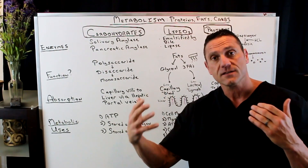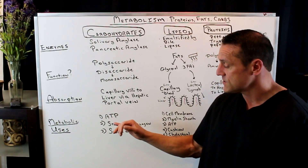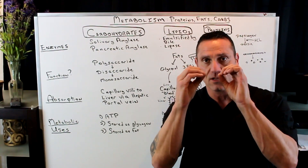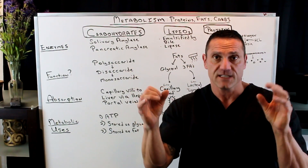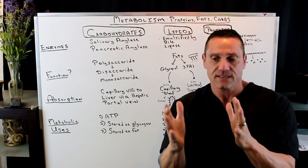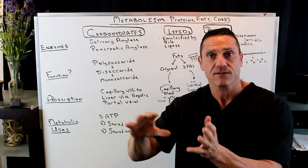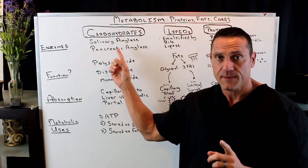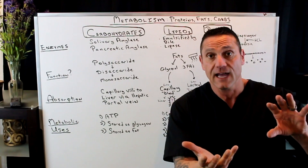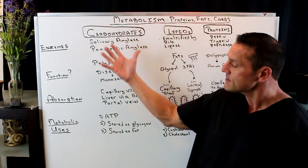Once it gets to the liver it's going to have multiple uses. It's going to make ATP. It's going to be stored as glycogen — remember, glycogen is stored glucose. Glucose in its simplest form is a single grape, whereas glycogen is a multitude of grapes and it's stored in the liver for energy when we need it later on. Or if we have too many carbohydrates taken in, it's going to go through a process called lipogenesis, which is going to be stored as fat. So that's carbohydrates.